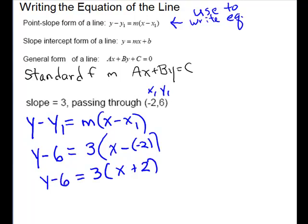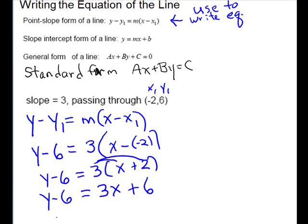Alright, that is your point slope form, but they want you to manipulate that to slope intercept form, which means isolate the y. So distribute here, you have three x plus six, and to get y by itself, we just need to add this six to the other side. So we get y equals three x plus twelve.